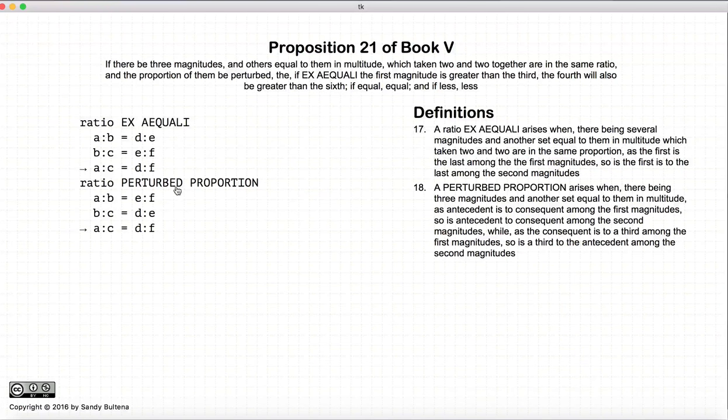A perturbed proportion is instead of having A to B is equal to D to E, we have A to B is equal to E to F, and B to C is equal to D to E. And then the result is the same as before. So again, A, B, C are proportional as D, E and F. However, A, B is equal to E, F. B, C is equal to D, E. So you can see that these two have been swapped. So that is a perturbed proportion.